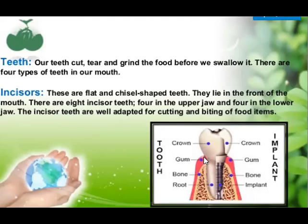If we look externally, the tooth is having three parts: crown, neck, and the part which is inside the gums, known as the root. So externally it has crown, neck, and root, and internally it is having more layers.